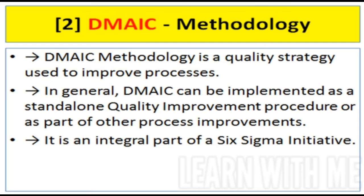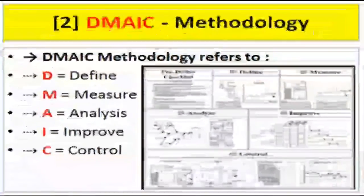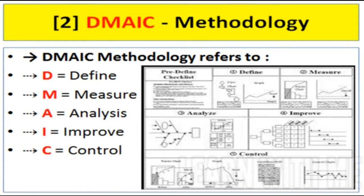The DMAIC method is a quality strategy and process improvement tool. It is a statistical tool used in quality improvement and process improvement. It is associated with the 6 Sigma method. DMAIC stands for: D is Define, M is Measure, A is Analyze, I is Improve, C is Control.